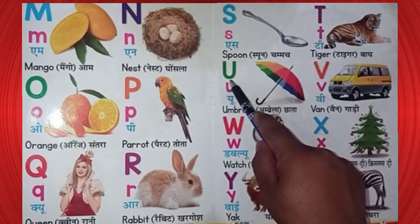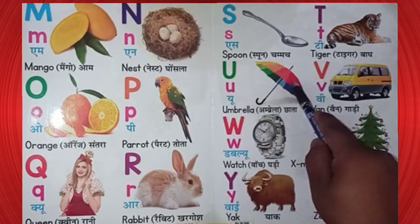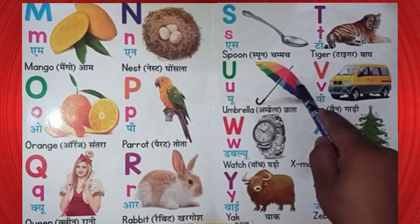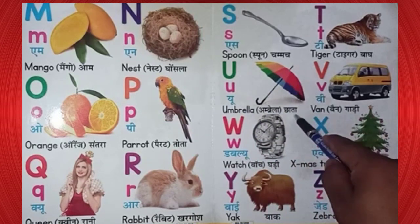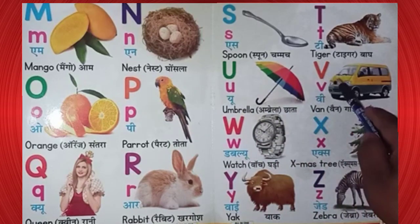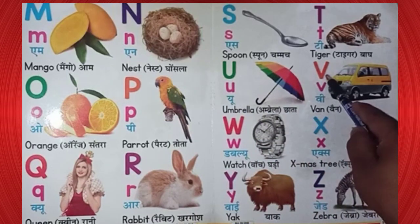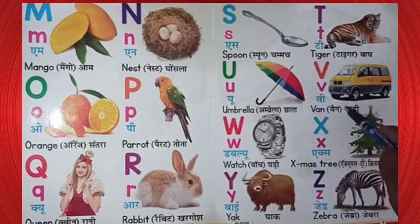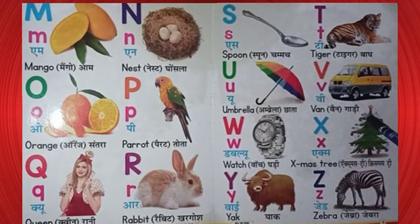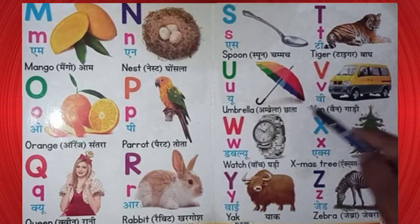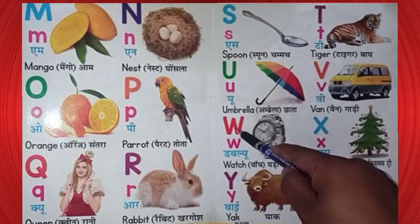U. U for umbrella. Umbrella means chata. V. V for van. Van means gari.